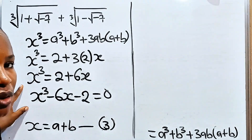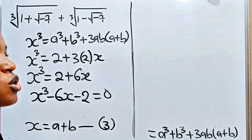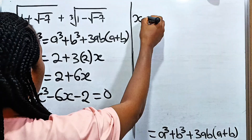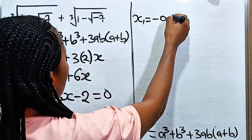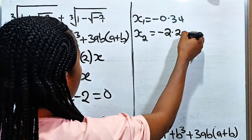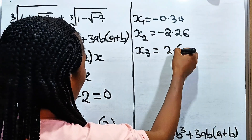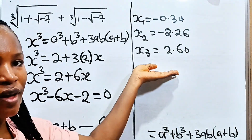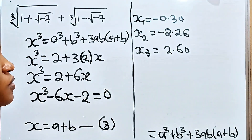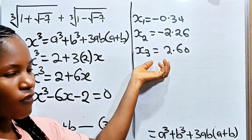You can solve x³ − 6x − 2 = 0 using many methods, but the easiest is the graphical method. After drawing the graph, the three solutions are: x₁ ≈ −0.34, x₂ ≈ −2.26, and x₃ ≈ 2.60.